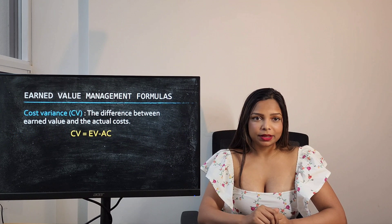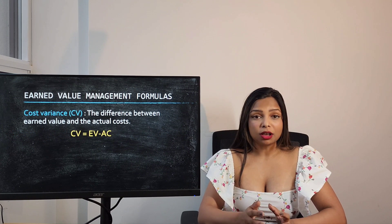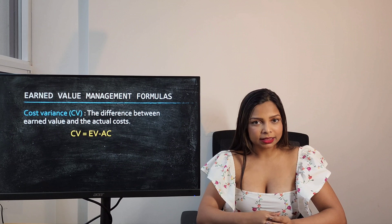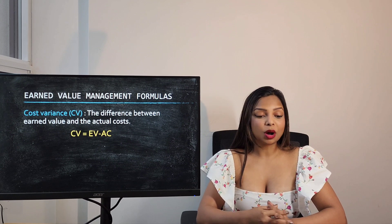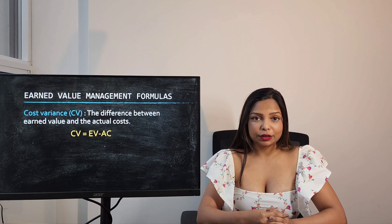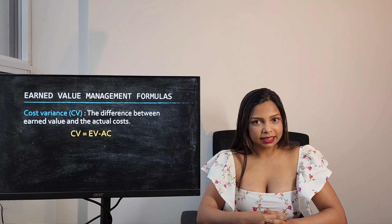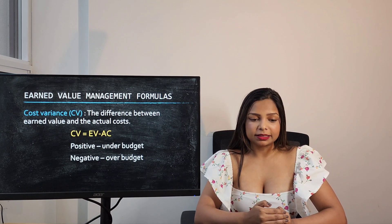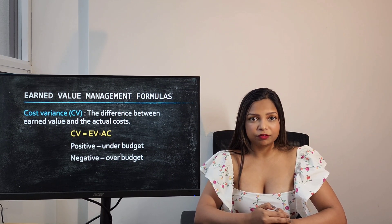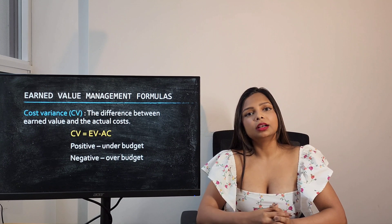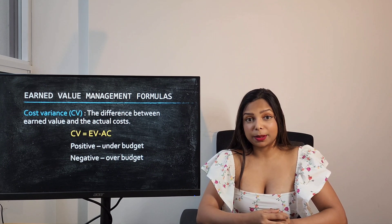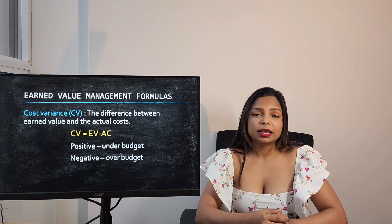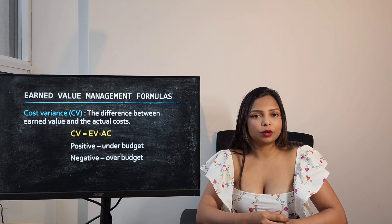Cost Variance is the difference between Earned Value and Actual Cost. The formula is EV minus AC. If Cost Variance is a positive number it means your project is under budget, but if the value is negative it means your project is over budget.